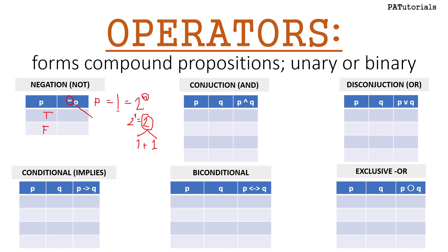Next is conjunction, which means 'and.' Here's the symbol for and. We now have two propositional variables, so 2 raised to 2 equals 4 — meaning we have four rows in our truth table: true-true, true-false, false-true, and false-false.